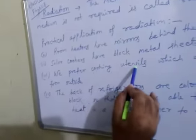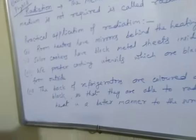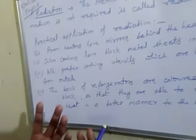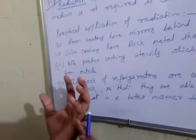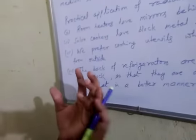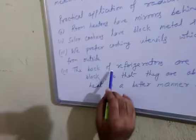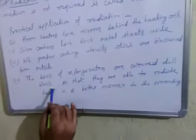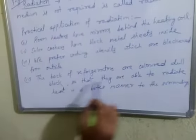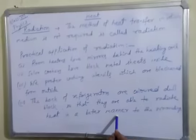We prefer cooking utensils which are blackened from outside — खाना पकाने का जो बर्तन है उसके बाहरी हिस्से पर अगर black है तो heat ज़्यादे absorb करेगा। The back of refrigerators are colored dull black so that they are able to radiate heat in a better manner to the surroundings.